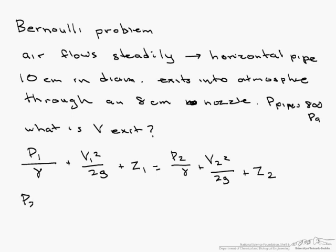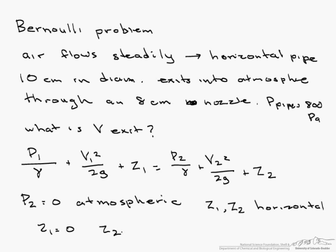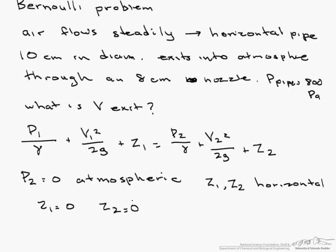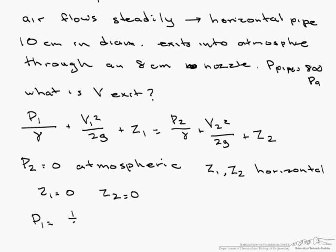So p2 equals 0 because it is atmospheric. We are working in gauge pressure, so the pressure is 0 at atmosphere. In addition, z1 and z2 are horizontal, since it is a horizontal pipe, therefore we can get rid of z1 and z2. So we can simplify this to p1 equals 1 half times rho v2 squared minus v1 squared. And I just manipulated through to get p1 by itself.